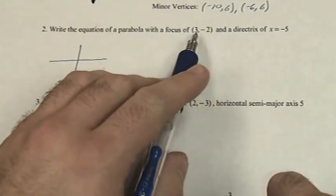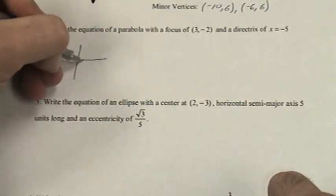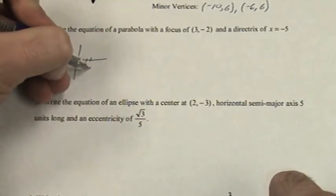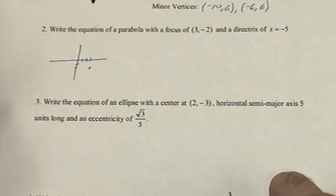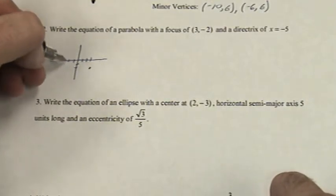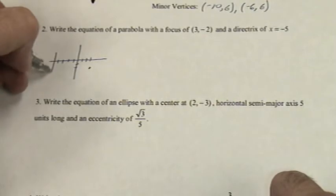We'll go to 3, negative 2, 1, 2, 3, 1, 2, put a dot there, and x equals negative 5, 1, 2, 3, 4, negative 5.